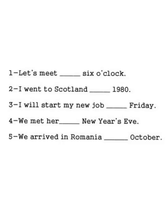Let's take examples. Number one: Let's meet at six o'clock. This is precise time, and for precise time we have to use at. Number two: I went to Scotland in 1980. 1980 is a year, and when we have a year we have to use the preposition in.